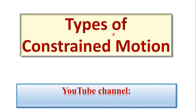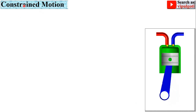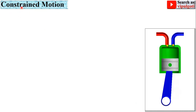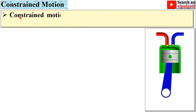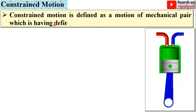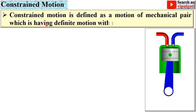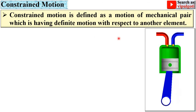Today I am going to discuss about types of constrained motion. Let's start from the first important term: what do you mean by constrained motion? Constrained motion is defined as a motion of a mechanical pair which has definite motion with respect to another element.